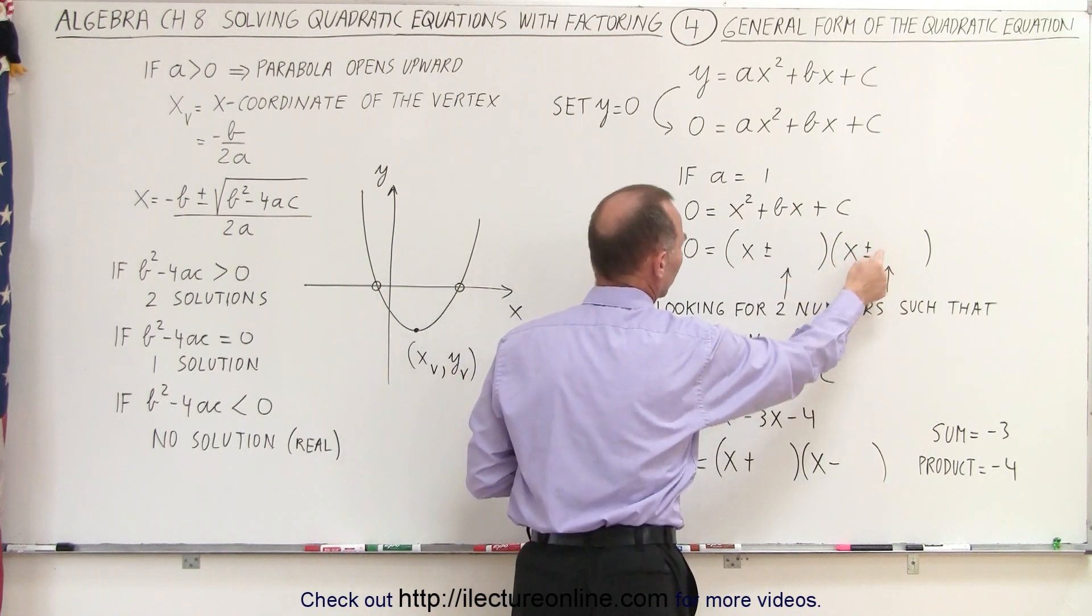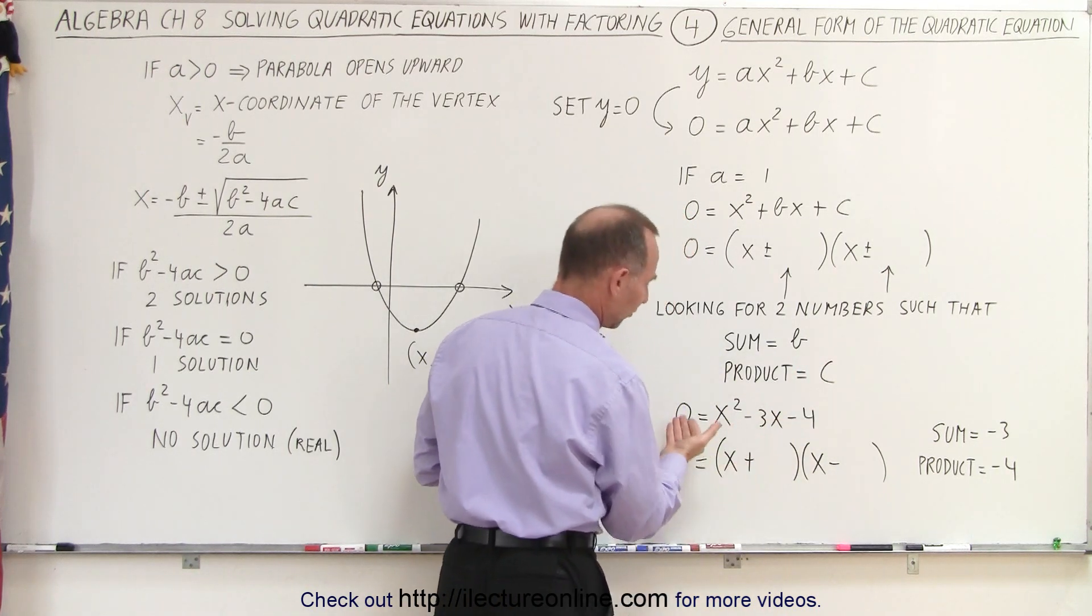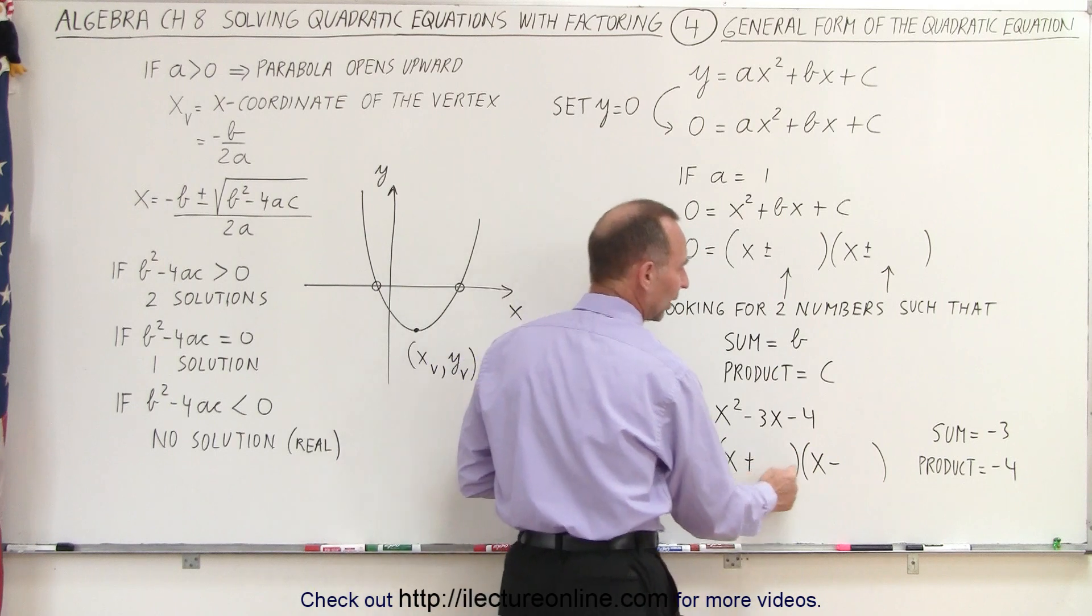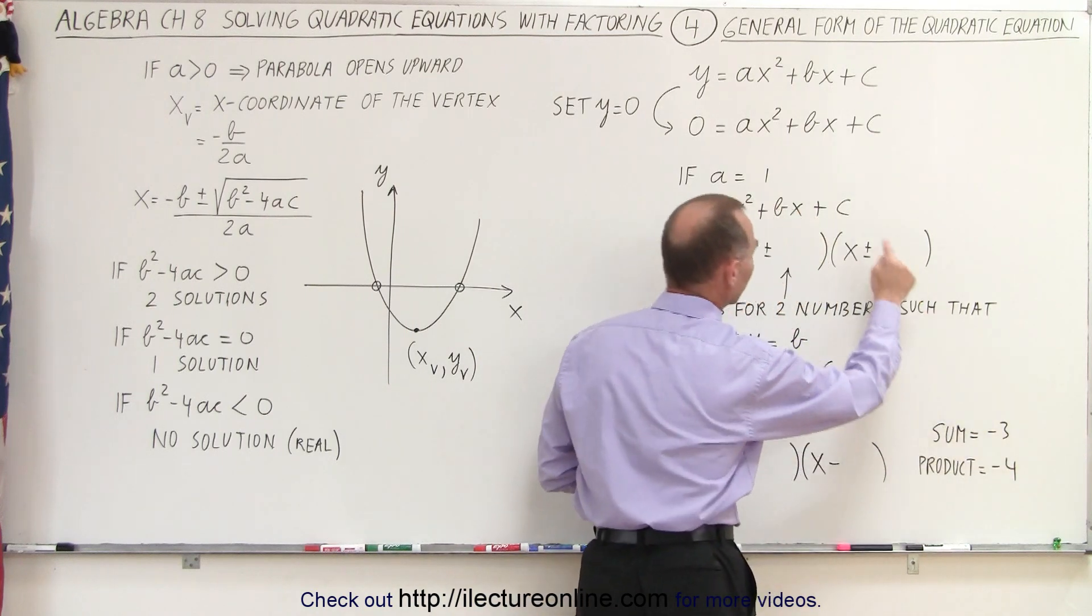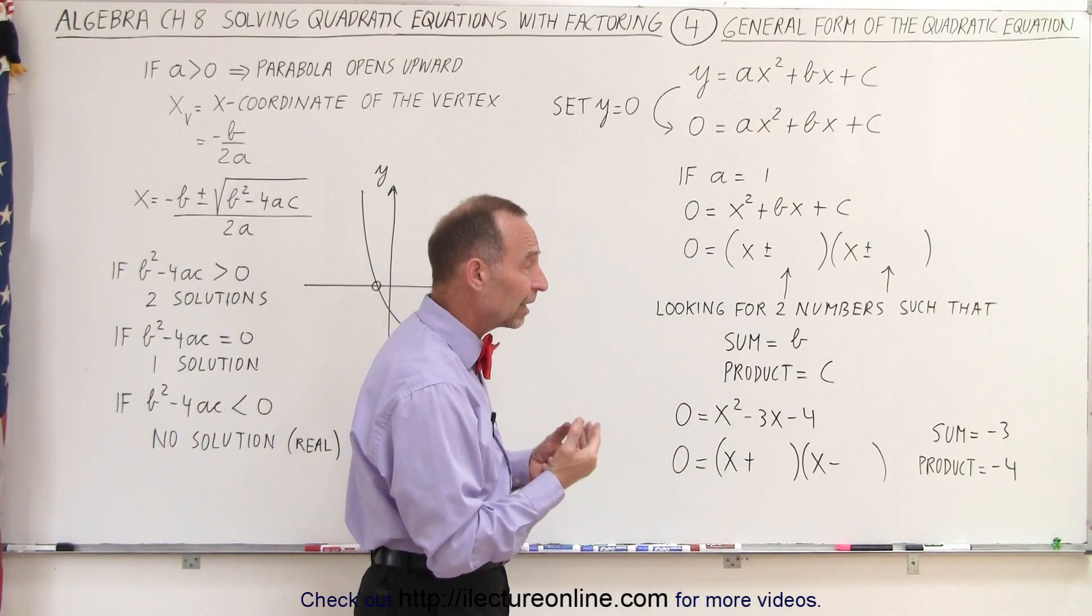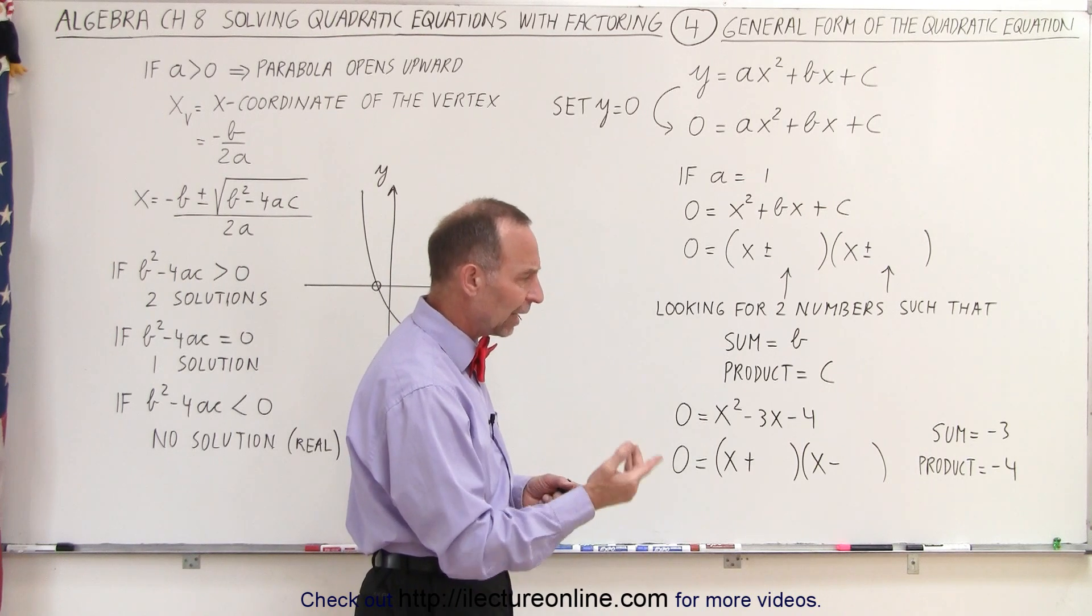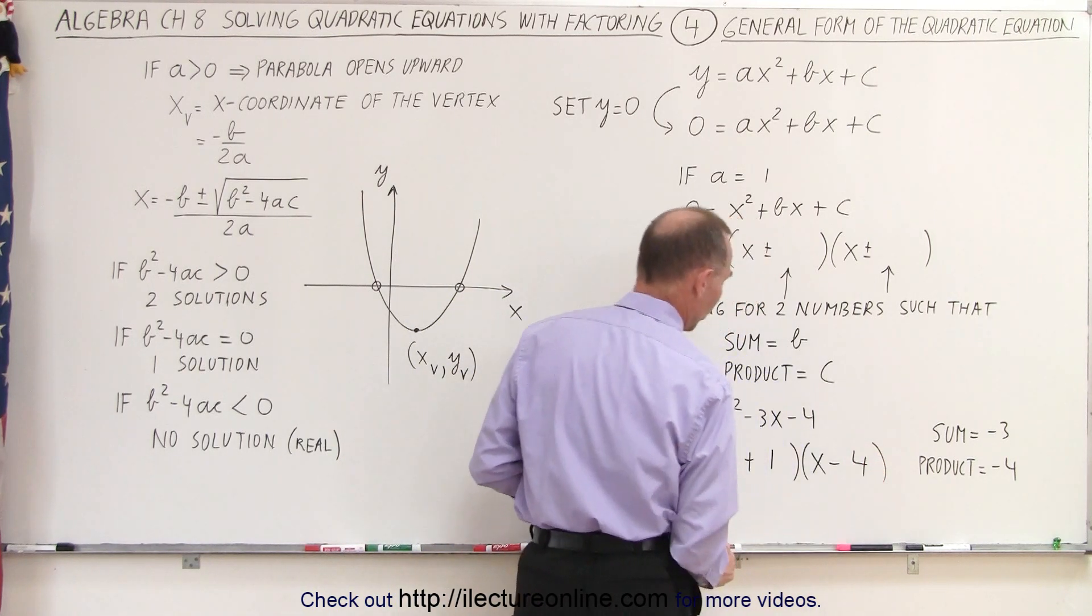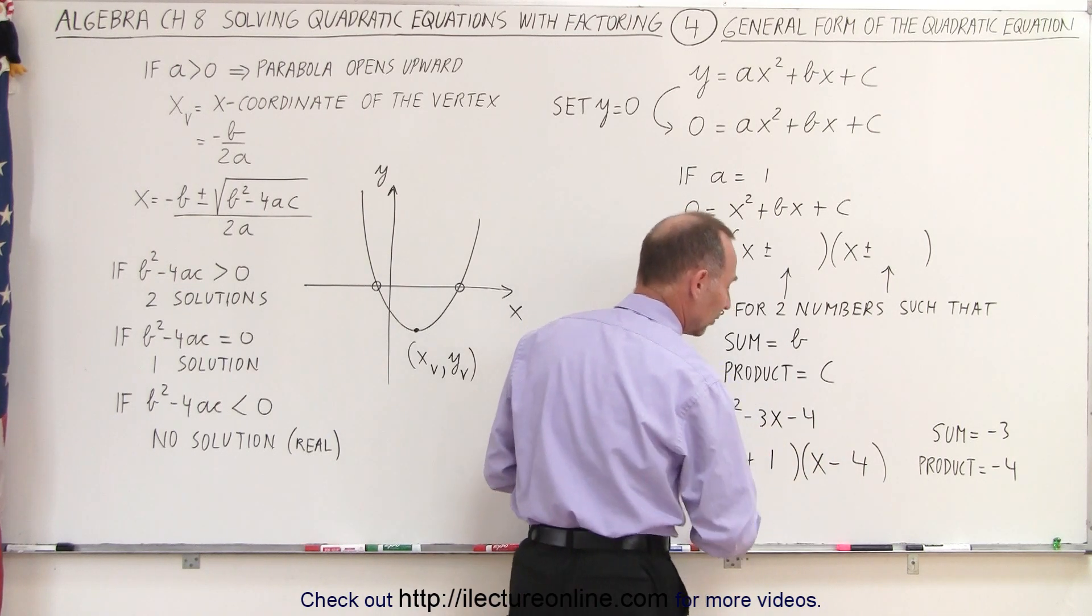And the two numbers, the sum of the two numbers will equal b, and the product of the two numbers will equal c. So in this case, on our example, we have 0 equals x squared minus 3x minus 4. We're going to factor it in this form, and the two numbers we're looking for are such that the sum is equal to negative 3. That's the b here, and the b is negative 3, and the product equals negative 4. That's the c here, which in this case is negative 4. So which two numbers will give us a sum of negative 3 when we add them, and a product of negative 4? So 1 times 4 gives you 4. 1 times a negative 4 gives you negative 4, and when you add those two, you get negative 3. So those work. So it would be x plus 1 and x minus 4. A quick check tells you that 1 times a negative 4 gives you negative 4, and a positive 1 plus a negative 4 gives you negative 3. So that is the factored form.